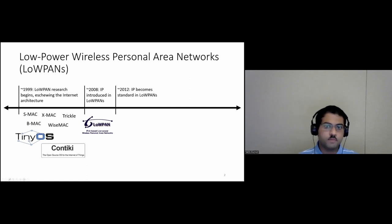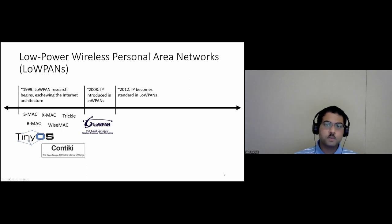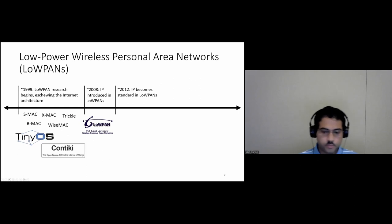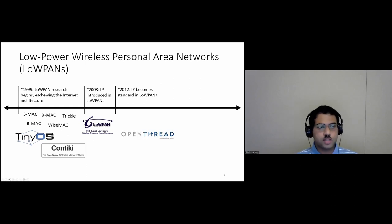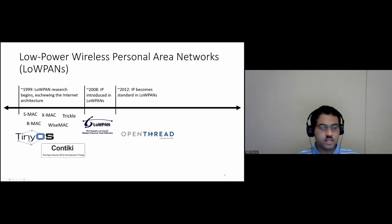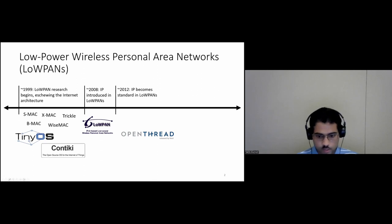About 10 years later, in 2008, IP — the internet protocol — was introduced in LOWPANs, largely through the 6LoWPAN layer. This allowed researchers to take techniques developed in earlier systems and make them work within an IP-based architecture. This caught on, and in a few years IP had essentially become the standard. But surprisingly, the adoption of IP did not include TCP. For example, OpenThread, open-sourced by Nest, didn't even support TCP, and Riot OS initially didn't support TCP either.